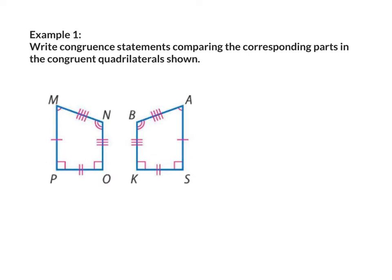Example number one: write congruent statements comparing the corresponding parts in the congruent quadrilaterals shown. First we're going to start with angles. So we'll start with angle M. Angle M is congruent to angle A, and the reason why is because they both have one arc.